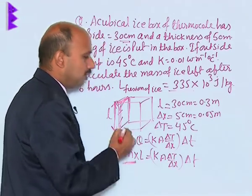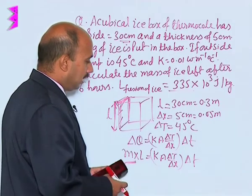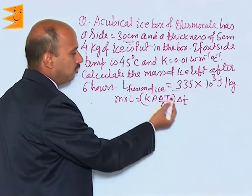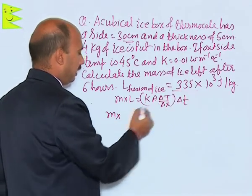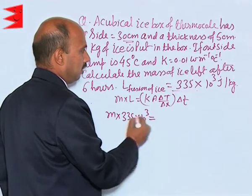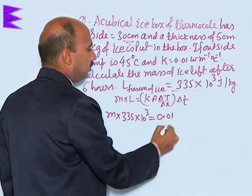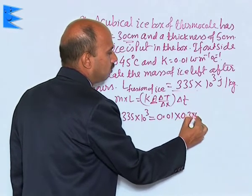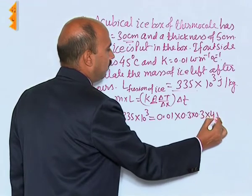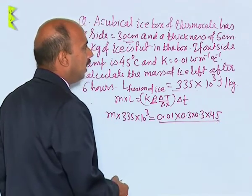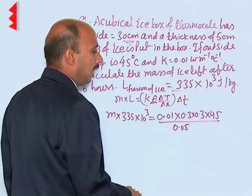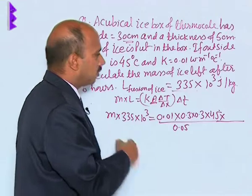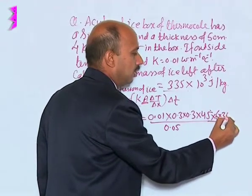Now we have to calculate mass. We put all the values: M into L, where latent heat is 335 into 10 to the power 3, equals k equals 0.01, into area — since it is a cubical box, area is the square of the length — so 0.3 into 0.3, into 45, divided by delta x which is 0.05. The whole thing is multiplied by time, which is 6 hours, written as 6 into 3600.